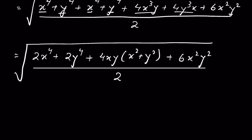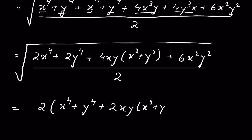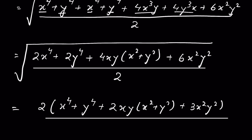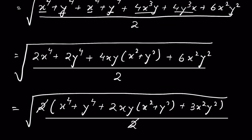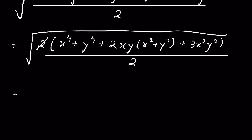Now take 2 as a common factor from the numerator. This gives us 2 times (x⁴ + y⁴ + 2xy(x² + y²) + 3x²y²) upon 2, under the square root. The 2 in the numerator and the 2 in the denominator cancel out.